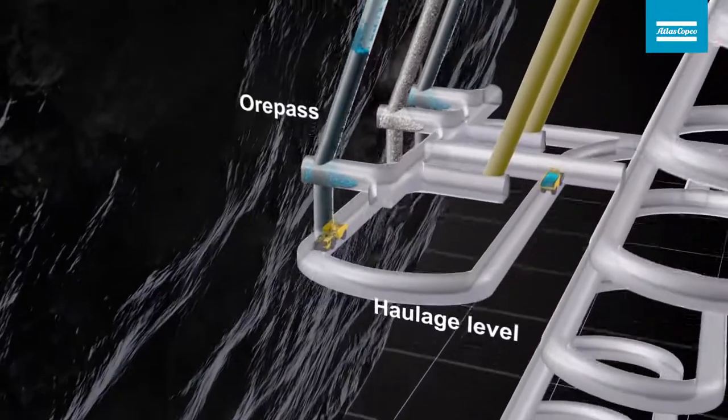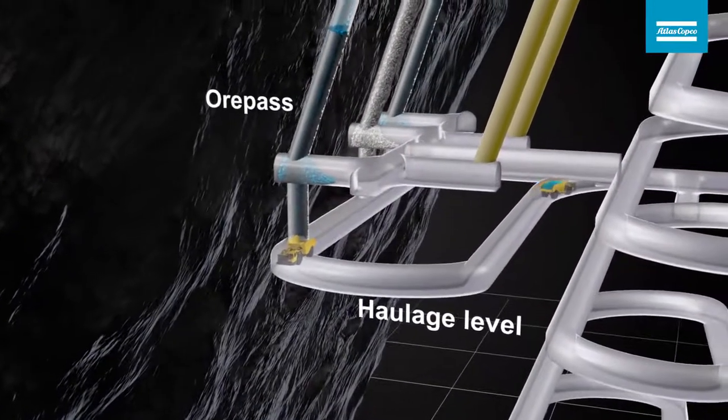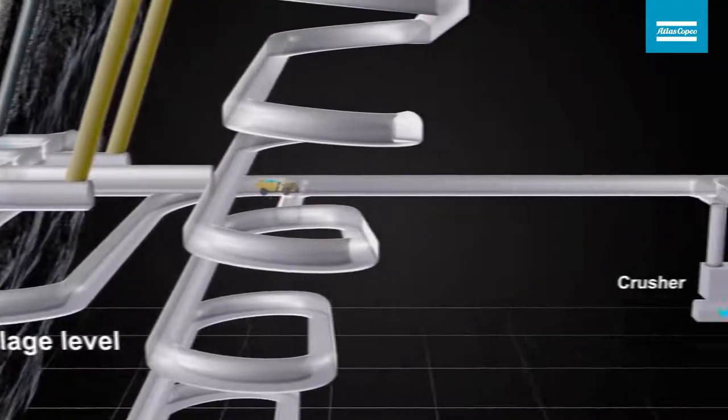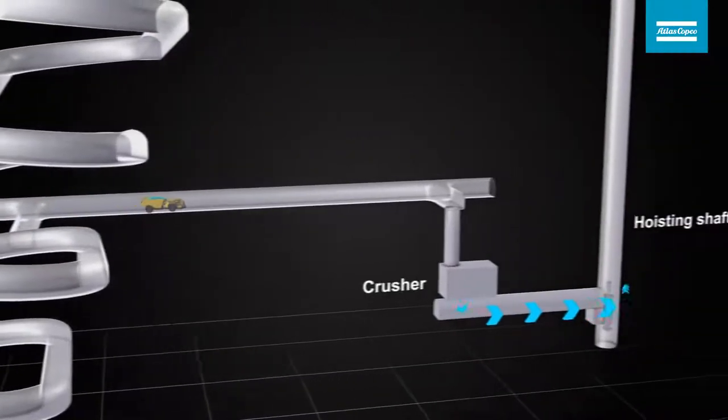Dumping the ore into ore passes connected to the haulage level is an efficient way of transporting rock from the production points to the crusher.